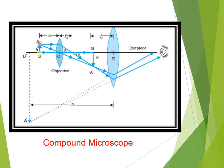In the ray diagram, an object is kept at a distance u from the objective lens, lying between f and 2f, so its magnified image is formed beyond 2f. This image acts as an object for the eyepiece. It is adjusted in the tube so that this image comes to the focus of the eyepiece lens. The eyepiece then produces a magnified image, and in this case the image forms at the least distance of distinct vision. The angle beta is formed here.